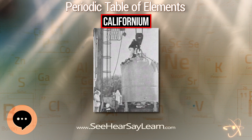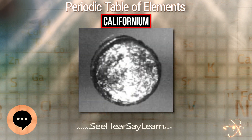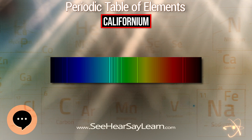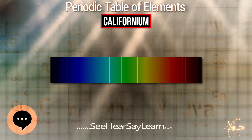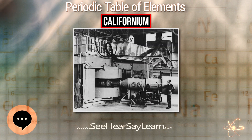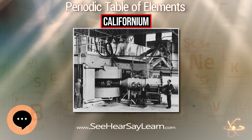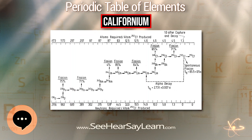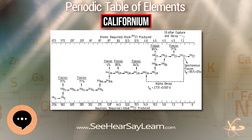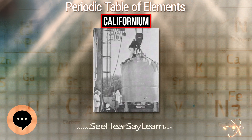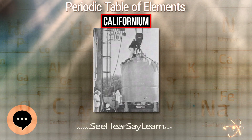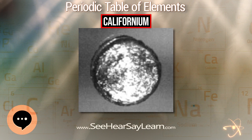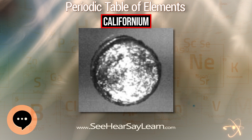Californium exhibits oxidation states of four, three, or two. It typically forms eight or nine bonds to surrounding atoms or ions. Its chemical properties are predicted to be similar to other primarily 3+ valence actinide elements and to dysprosium, the lanthanide above californium in the periodic table. The element slowly tarnishes in air at room temperature, with the rate increasing when moisture is added.